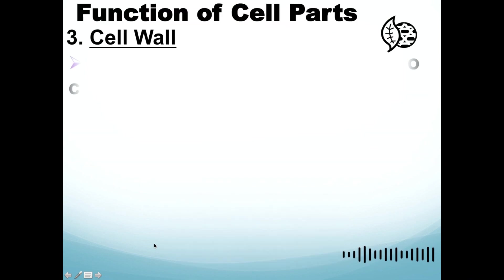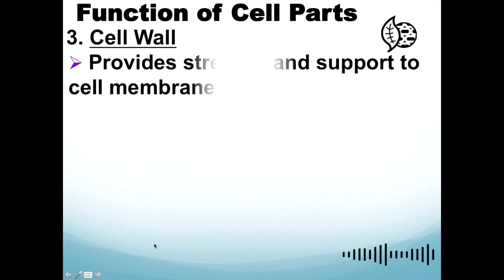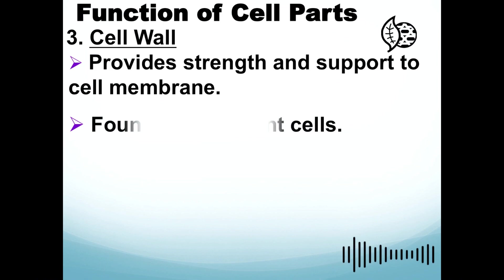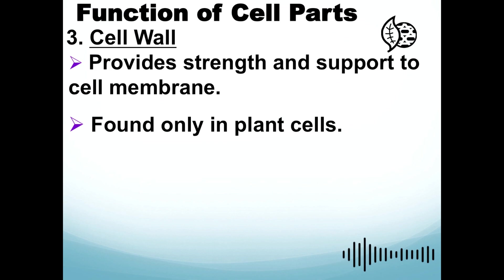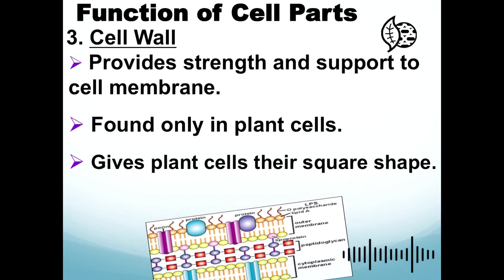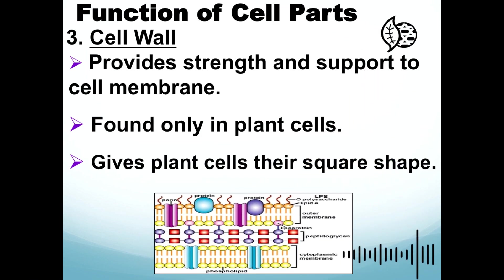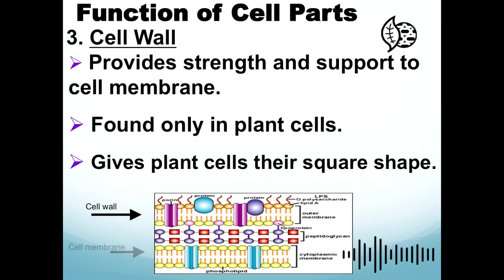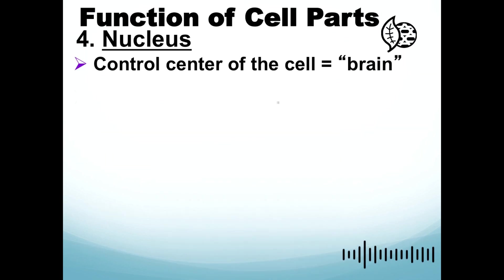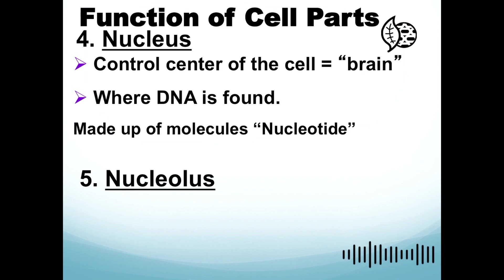Next is the cell wall — only plant cells contain a cell wall; animal cells do not have it. It provides strength and support to the cell membrane and gives plant cells their square shape. The cell wall contains a polysaccharide substance found outside the plasma membrane of the plant cell.